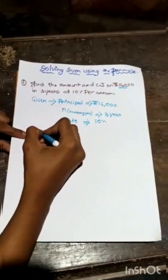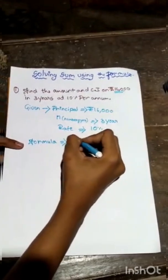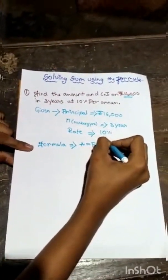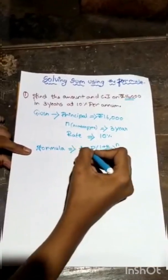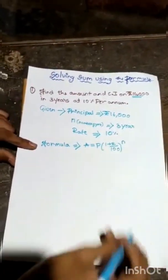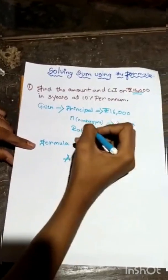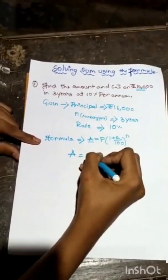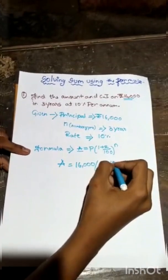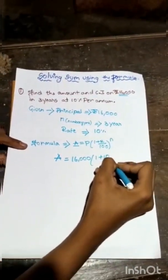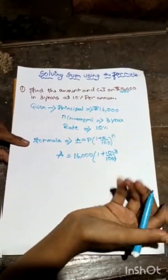Now the formula. Amount equals principal into (1 plus R by 100) raised to N. Here, the amount is not given, so we can write A. Here, what is principle? 16,000. And the rate is 10%. Let this one be like that. And here, number of years is 3. This we can call it as cube also. So A equals 16,000...